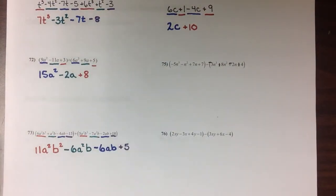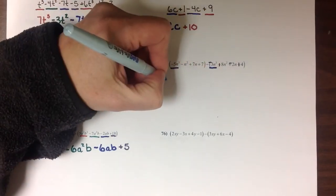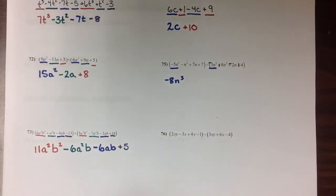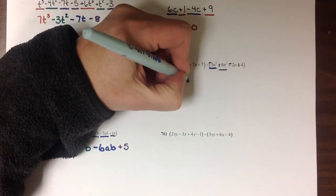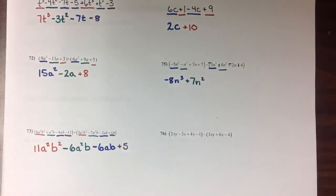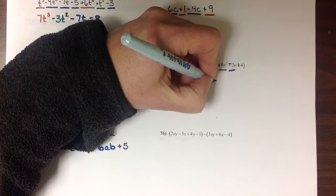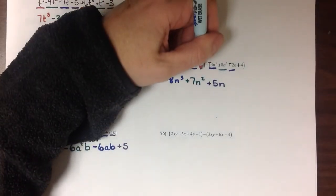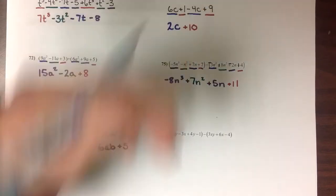So combining my like terms, -5n³, -3n³ is -8n³. My squared terms, a -n² and a positive 8n² is going to leave me with positive 7n². My n terms are a positive 7 and a -2, so combined make a positive 5. And my constant terms, a positive 7 with a positive 4, is going to give me a positive 11.